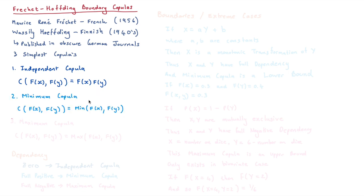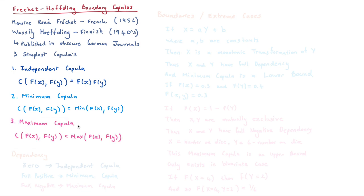Then we have the second copula: something known as the minimum copula. The idea is that the copula function between F of X and F of Y is simply going to be the smaller of the two — the minimum value. And we also have something known as the maximum copula, which says the joint distribution between two marginal distributions is sometimes the maximum of the two.